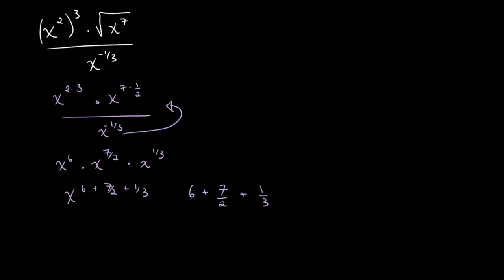Let's take a common denominator of 6. So we get 36 over 6 plus 21 over 6 plus 2 over 6. This equals 59 over 6, which gives us our final answer: x to the power of 59 over 6.